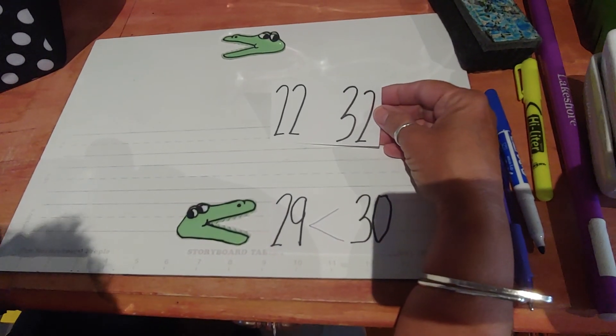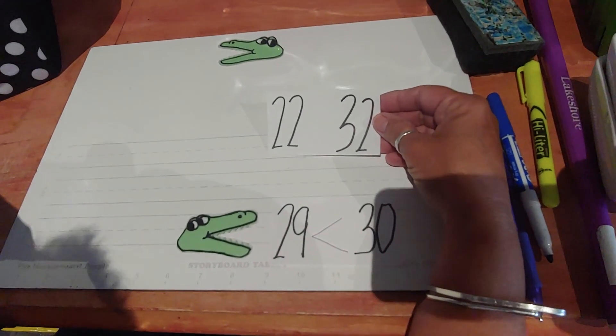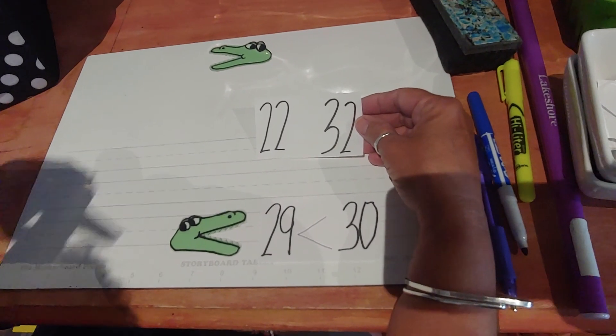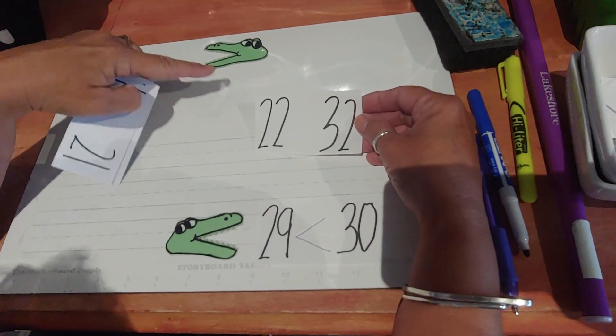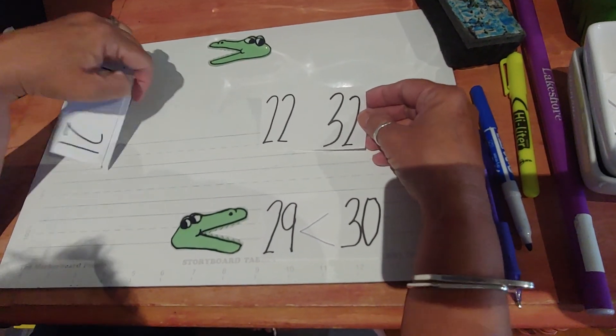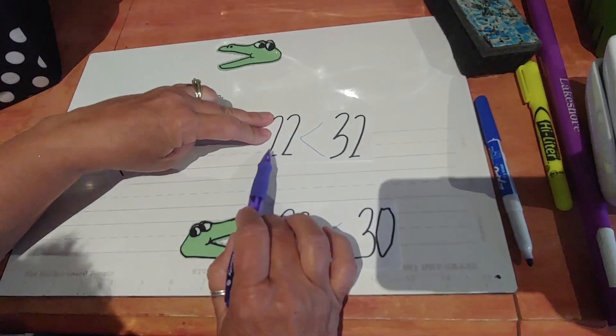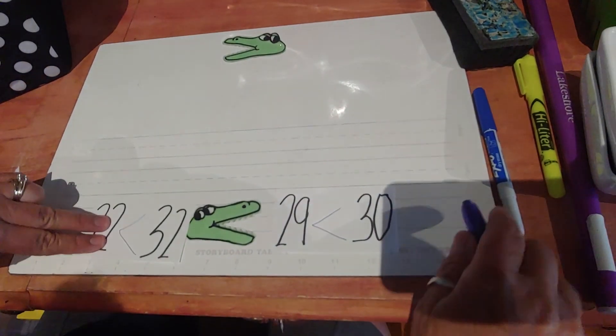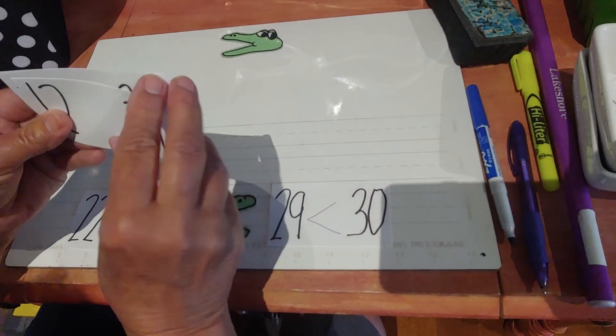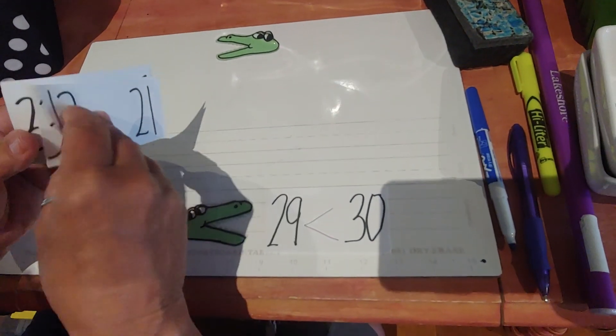What about this number? 22 is what to 32? Is 22 greater than 32? Nope. So it's going to go this way. This says 22 is less than 32. So it's going to go to the bottom alligator. Then we can pull out the next one.